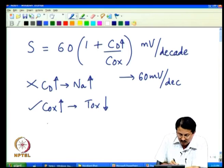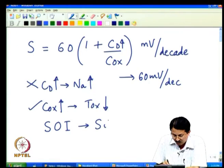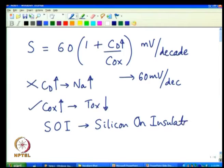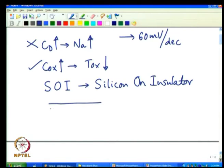There is a variant of technology called SOI — Silicon On Insulator — which will be discussed in detail in a future lecture. One of the biggest advantages of SOI technology is that you can really achieve 60 mV/decade sub-threshold slope by minimizing Cd to a very small value, though never exactly zero.